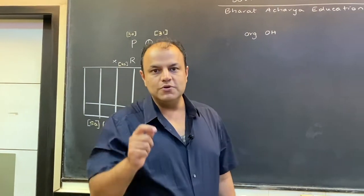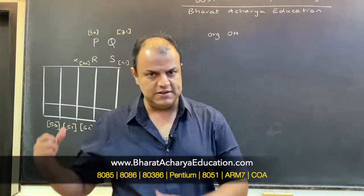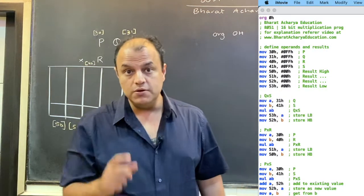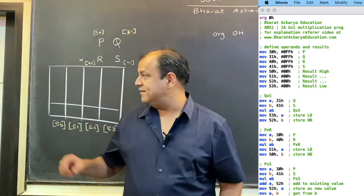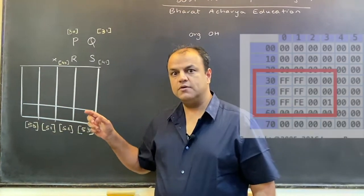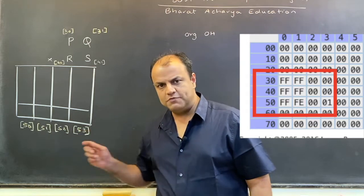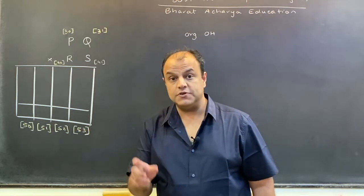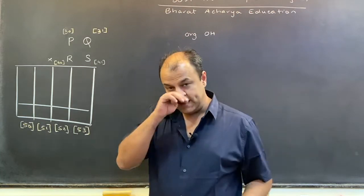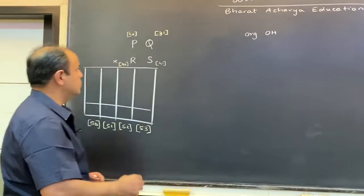This program will be executed on the EDSim simulator. When you do that in EDSim you will see locations 30 and 31 as your full 16-bit first number, 40 and 41 as your second 16-bit number, and right below it 50, 51, 52, 53 as your result. It's very easy to see what you're doing — that's the reason why I've taken these particular locations.